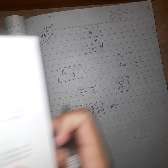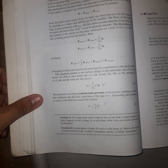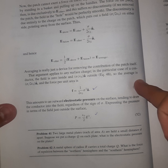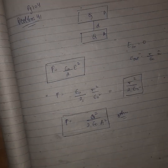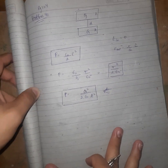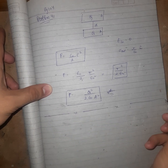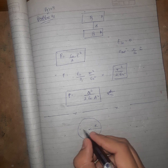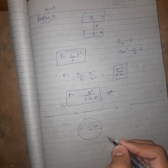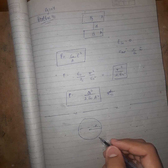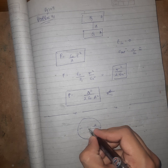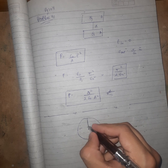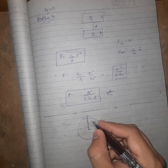Now let us start question 42. It says: a metal sphere of radius R carries total charge q — what is the force of repulsion between the northern hemisphere and the southern hemisphere? This is a tricky question. We have a metal sphere of radius R and we need to find the force of repulsion between its two hemispheres.